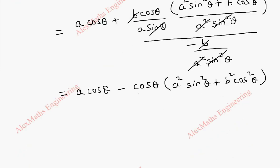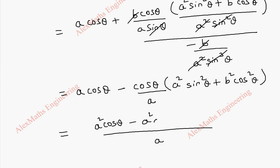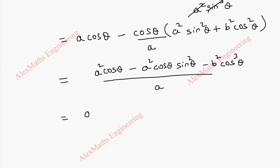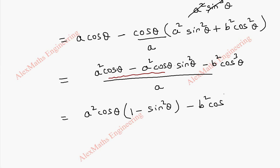Taking a minus sign before this term, we get: x̄ equals a cos θ minus a cos θ times (a² sin² θ plus b² cos² θ), which expands to a cos θ minus a² cos θ sin² θ minus b² cos³ θ. From the first two terms, taking a² cos θ common, we get a² cos θ times (1 minus sin² θ), then minus b² cos³ θ, all divided by a. This is our x̄.